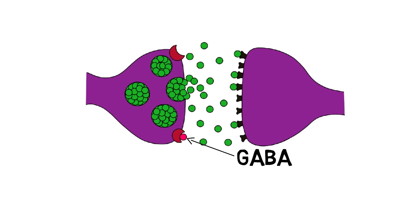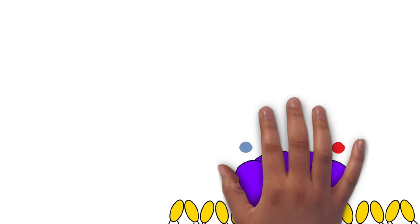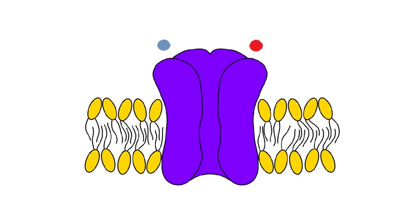The actions of GABA are terminated by proteins called GABA transporters, which transport GABA from the synaptic cleft into neurons or glial cells, where it is degraded primarily by mitochondrial enzymes.